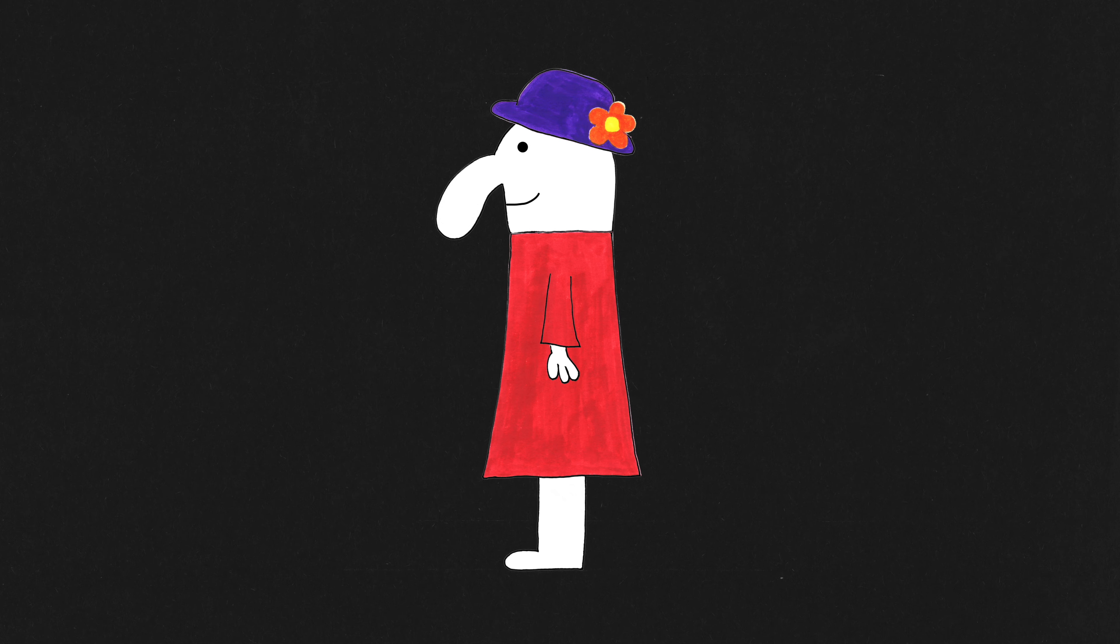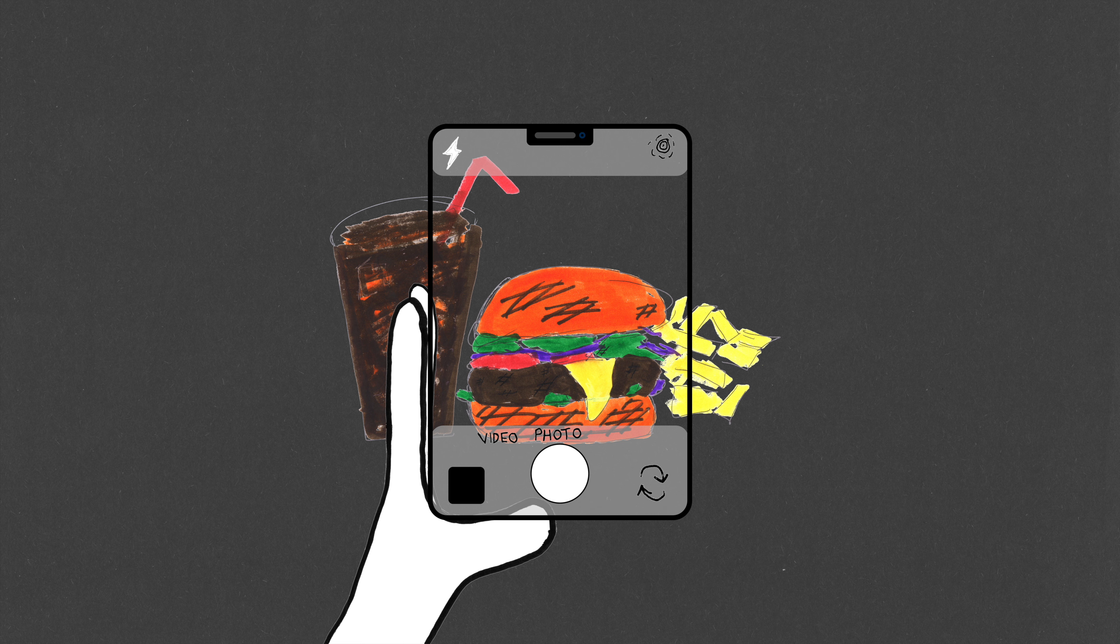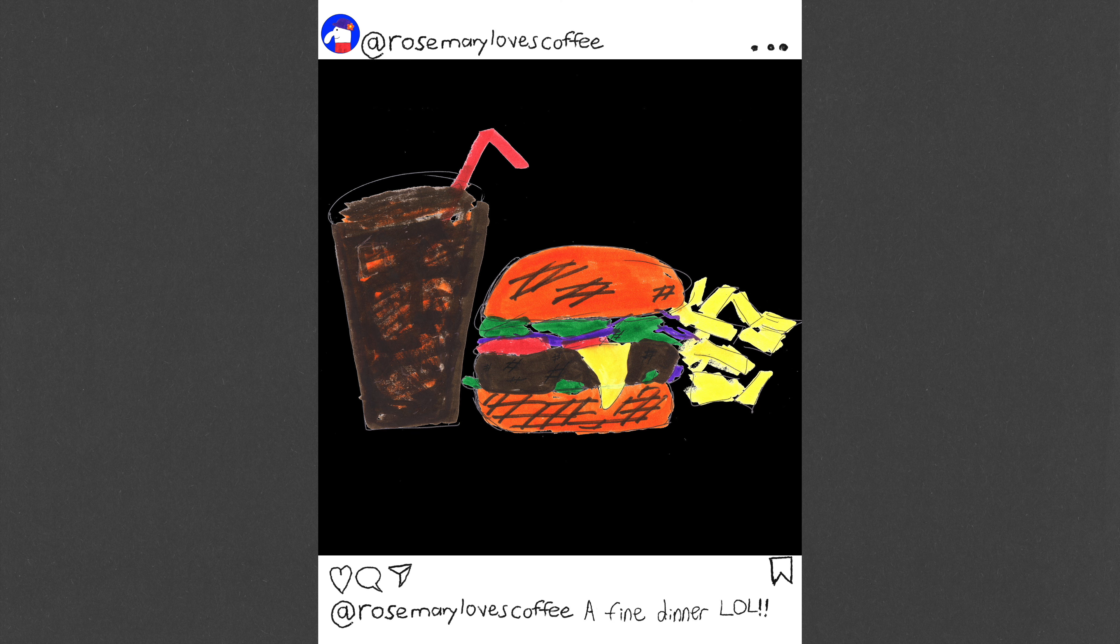This is Rosemary. Rosemary has a cell phone. Rosemary takes pictures of her food and uploads them to the internet with her cell phone.